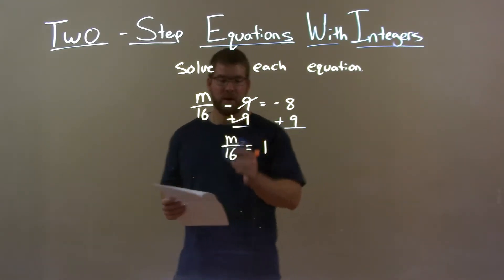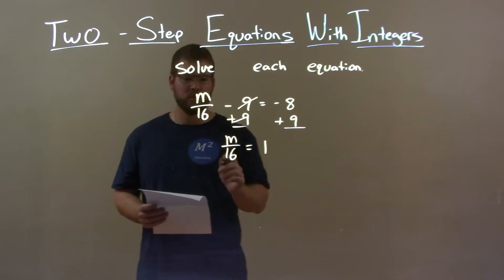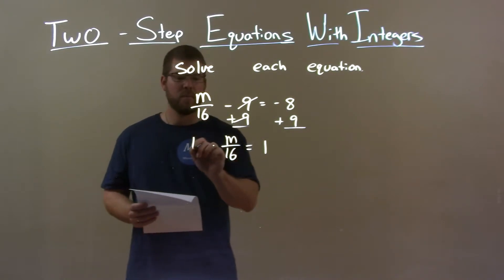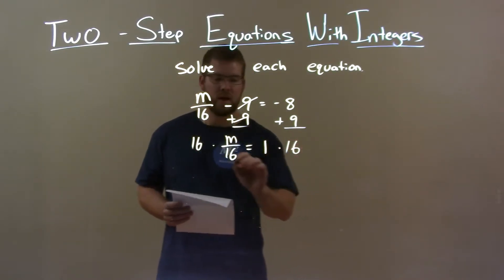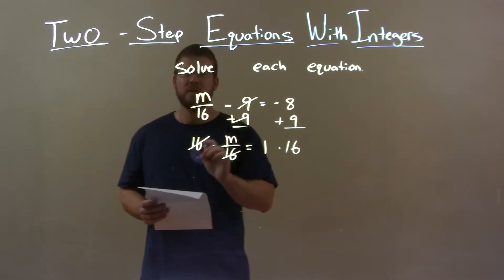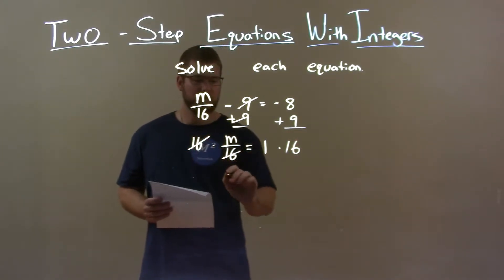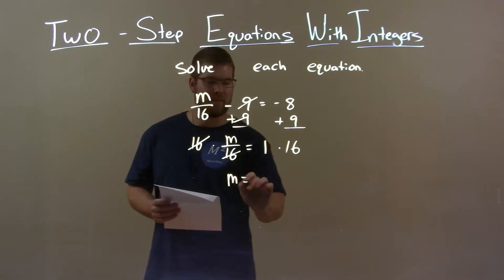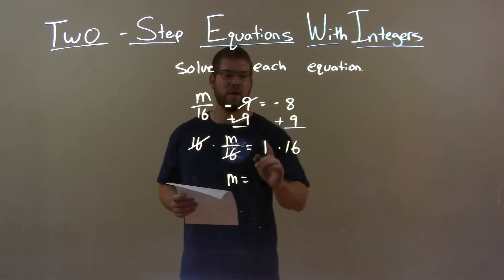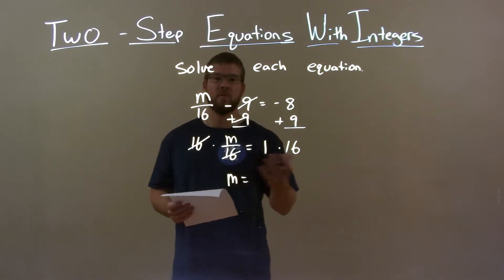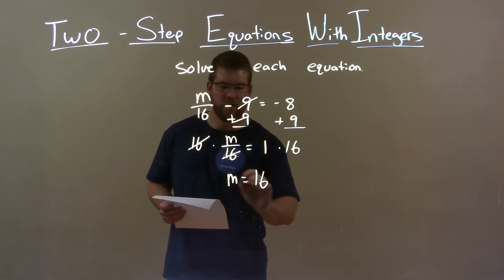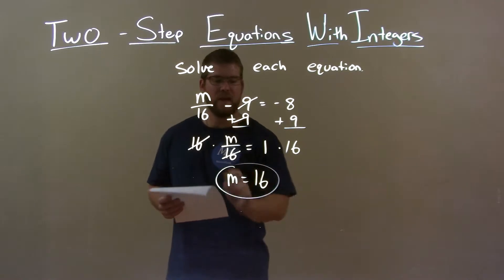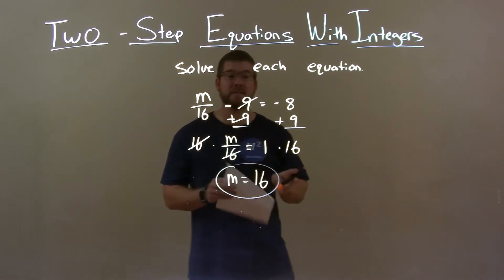Now, divided by 16 — the opposite of division is multiplication. Multiply 16 to both sides. The 16's cancel, leaving M by itself on the left and 1 times 16 on the right, which is 16. So my final answer is M equals 16.